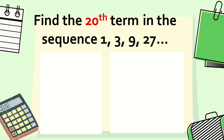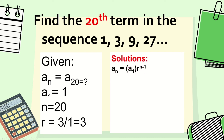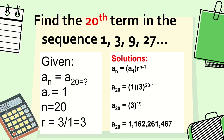First example: find the 20th term in the sequence 1, 3, 9, 27. The given: a sub n equals a sub 20 (unknown), a sub 1 equals 1, n equals 20, and r equals 3 divided by 1 equals 3. Substituting into the formula: a sub 20 equals 1 times 3 raised to 20 minus 1, which simplifies to 3 raised to 19. Multiplying 3 by itself 19 times gives us 1,162,261,467.